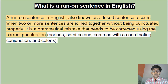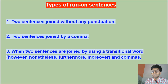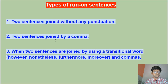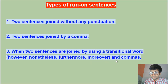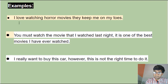We need to know how they look and how to correct them. There are three types of run-on sentences in English. Number one: two sentences joined without any punctuation. Number two: two sentences joined by a comma — that's also a run-on sentence. Number three: two sentences joined by using a transitional word such as 'however,' 'nonetheless,' 'furthermore,' or 'moreover,' along with commas. That is also a run-on sentence.